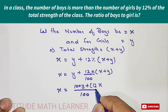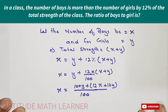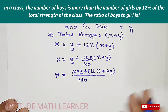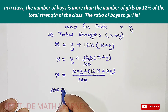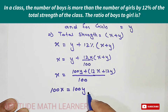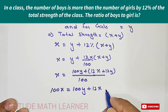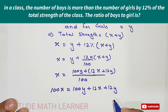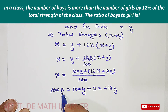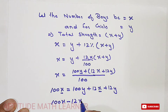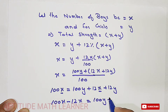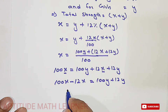Rearranging: 100x = 100y + 12x + 12y. Bringing the x terms together: 100x − 12x = 100y + 12y, which gives us 88x = 112y.